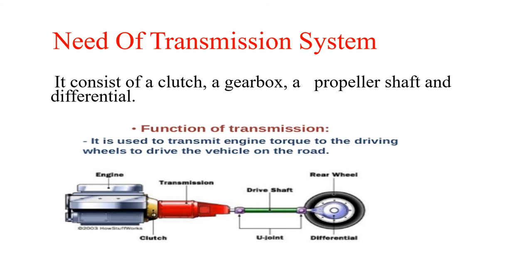The IC engine requires a transmission system. The transmission system consists of clutch, gearbox, propeller shaft, and differential. The function of the transmission system is to transmit engine torque to the driving wheels to drive the vehicle on the road.